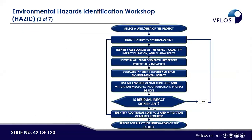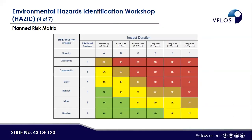This is a flow chart for the ENVID workshop. First, we select an environmental aspect and identify its sources. We then quantify the impacts, assess impact duration and characterization, and identify receptors potentially impacted by the project. We then evaluate the inherent severity of each environmental impact and list all the environmental controls and mitigation measures incorporated in the project design. If residual impacts are still significant, additional controls or mitigations are added. The environmental impact severity matrix is used for planned environmental impacts, with severity ranging from notable, minor, serious, major, catastrophic, to disaster, and impact duration from momentary (less than one week) through short-term, medium-term, long-term (up to more than 30 years).